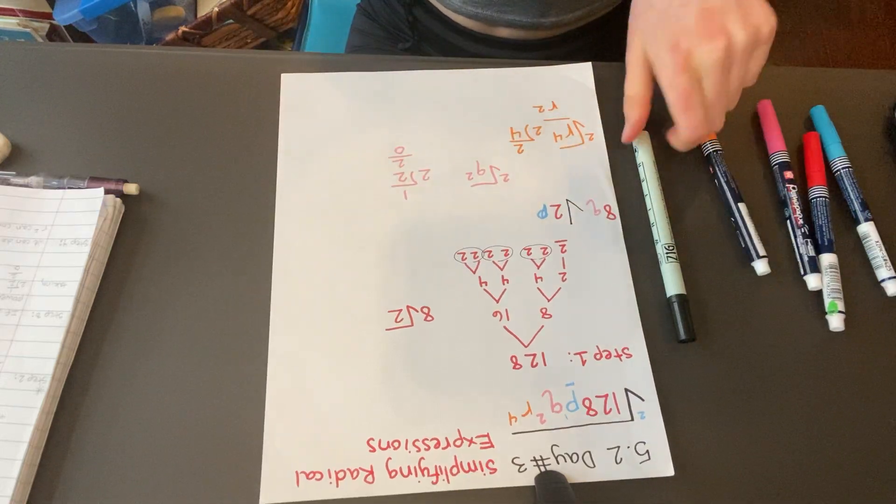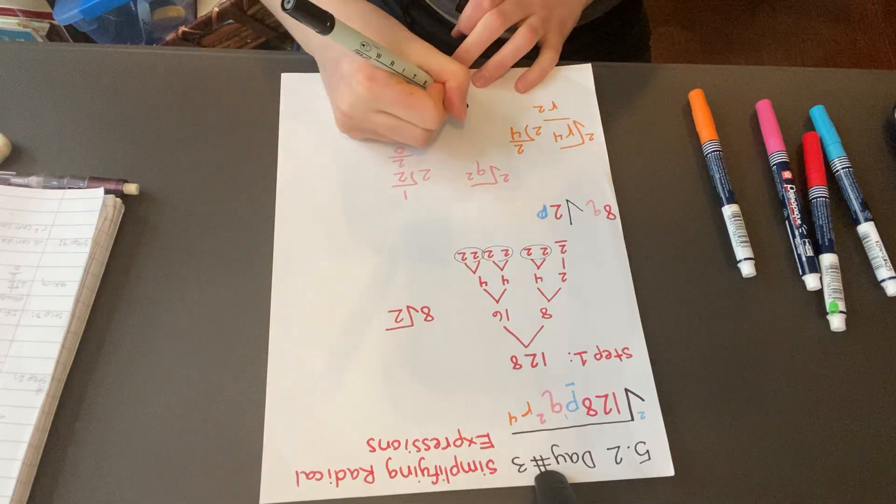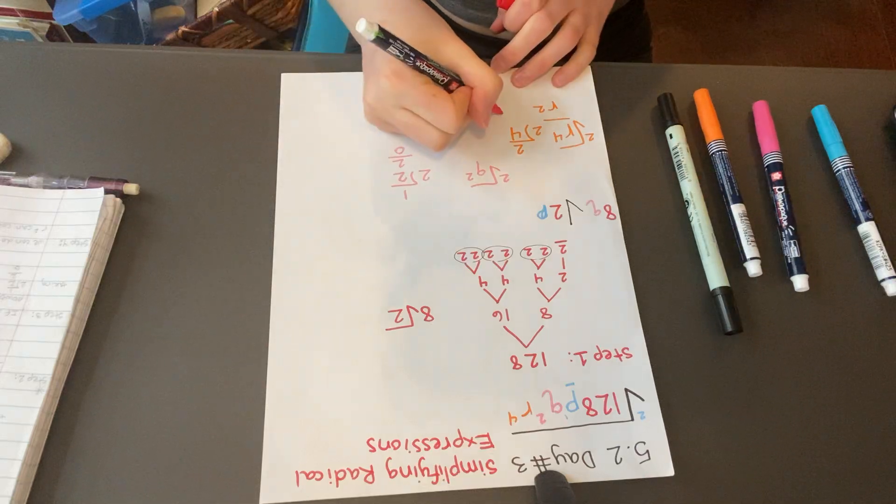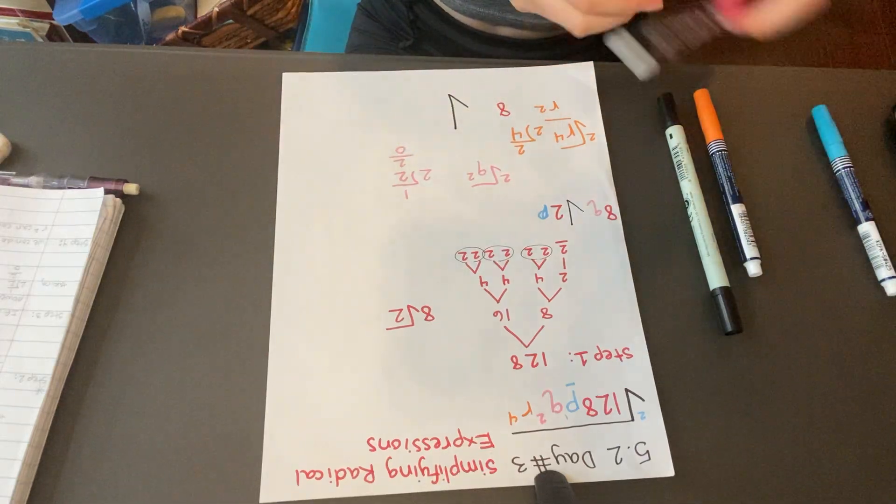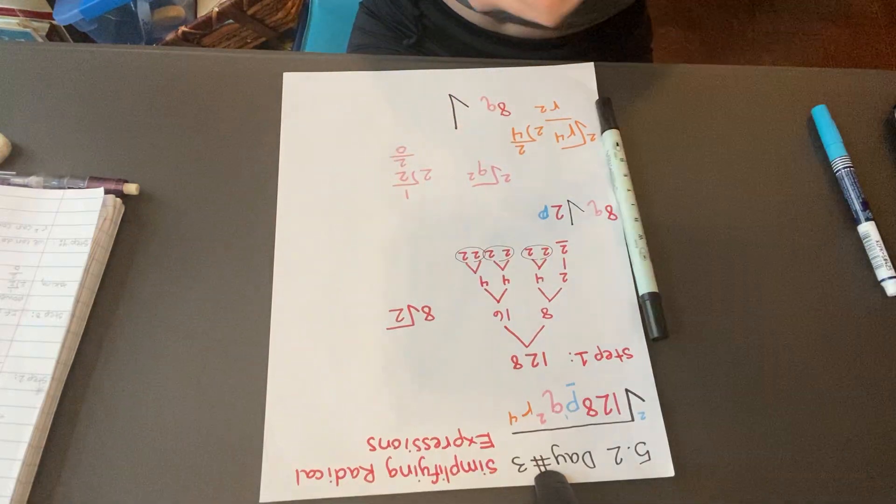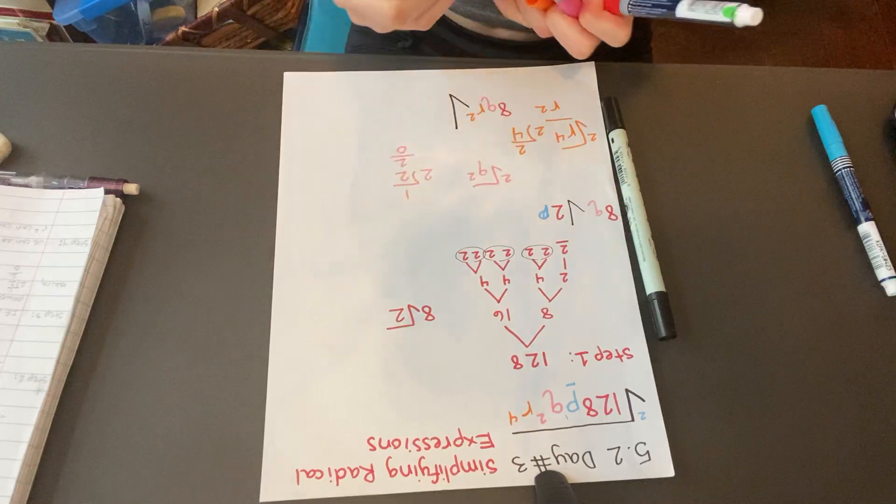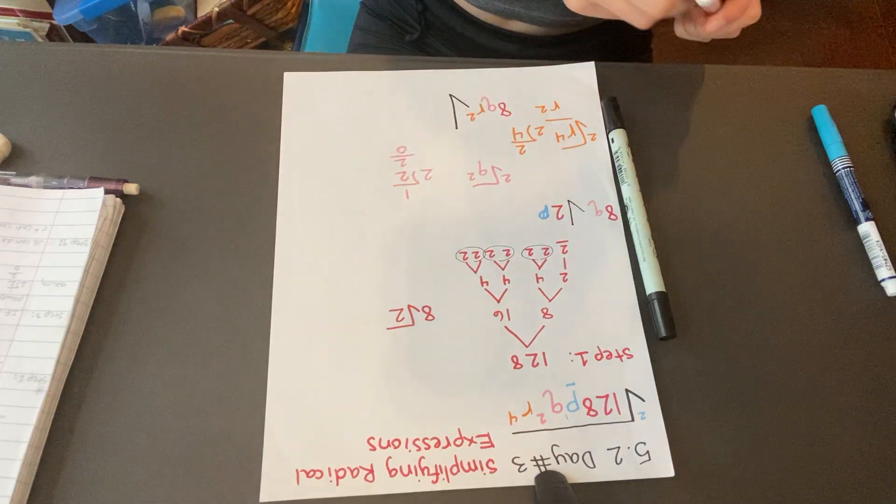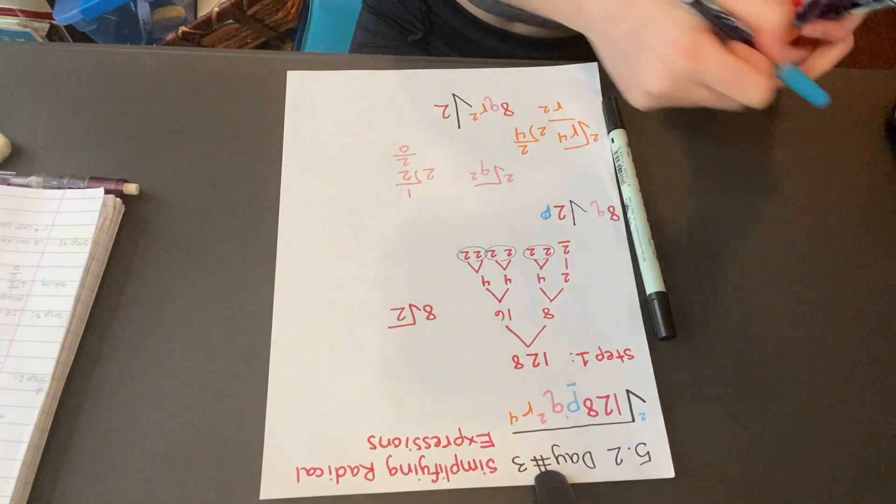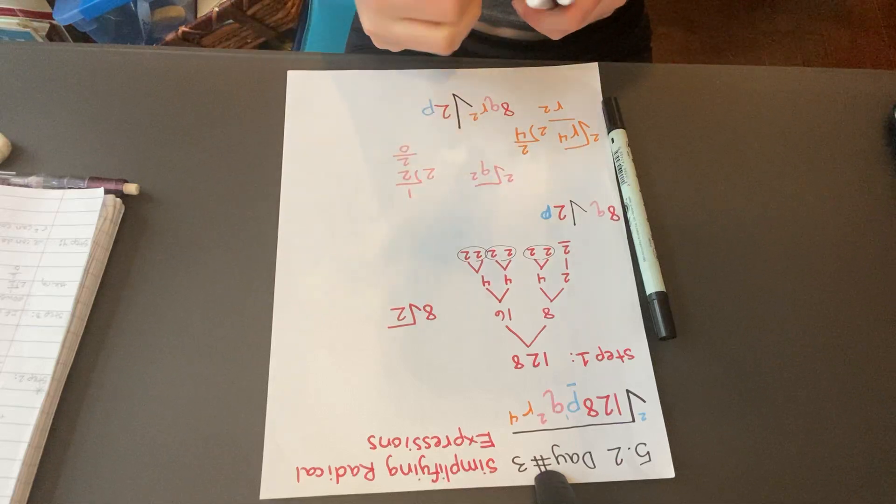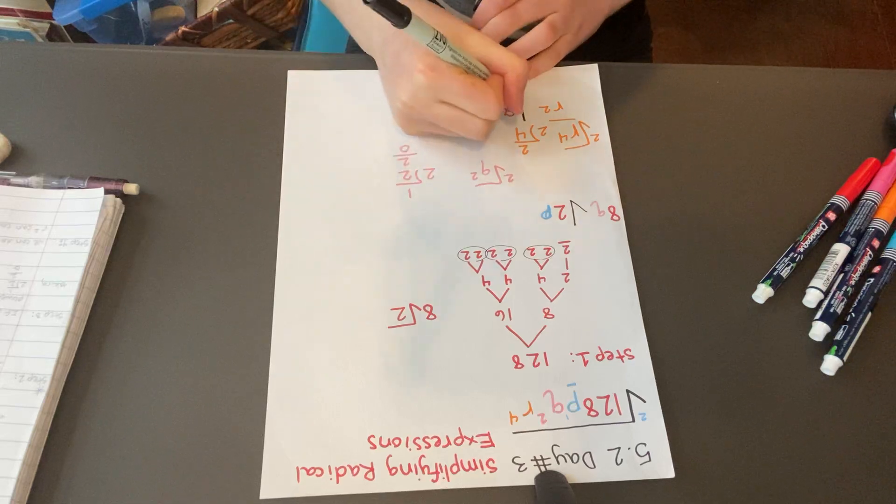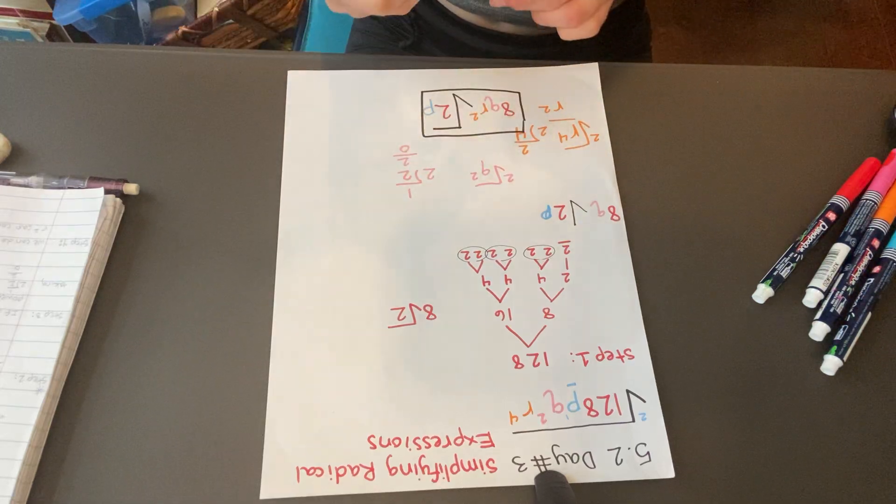So our final answer will be 8QR squared, the square root of 2P. And that is the final answer. Thank you.